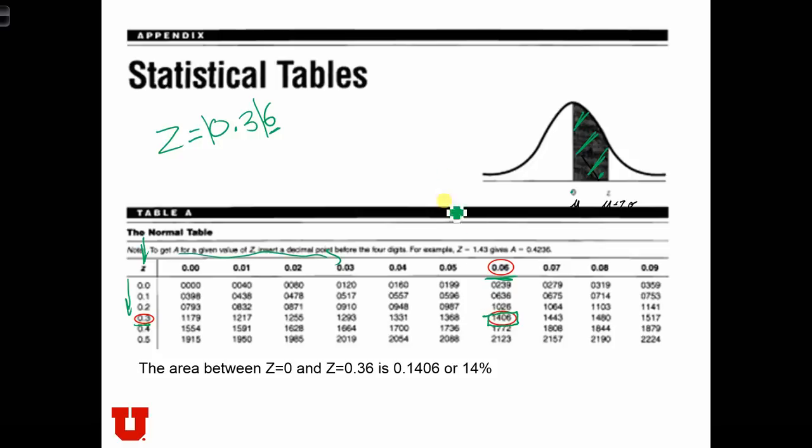Now that says 1, 4, 0, 6. The way this table works is that actually means that this area is equal to 0.1406, or 14.06%.